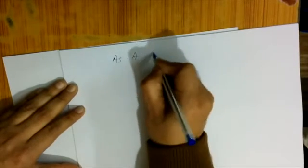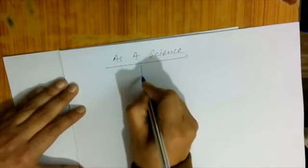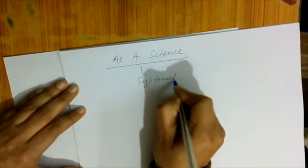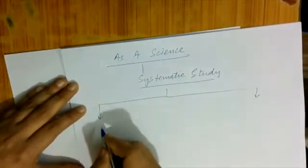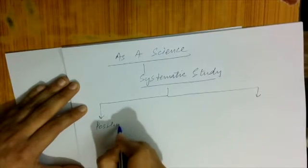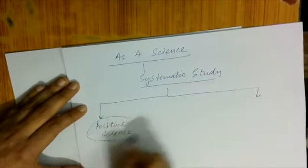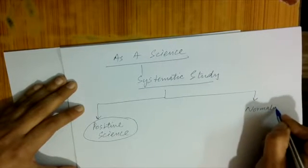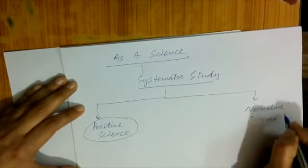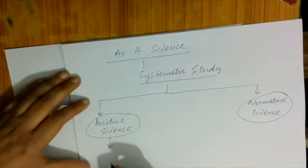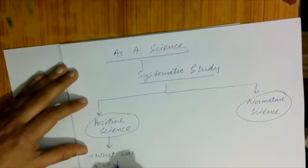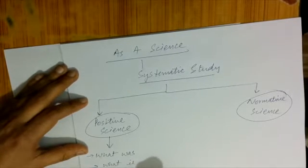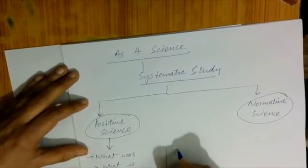As a science, Economics is discussed in two parts. Economics is a science because it is a systematic study. As a science, we divide it into two parts: Positive Science and Normative Science. Positive Science is a science which tells us what was, what is, and what would be under given conditions.